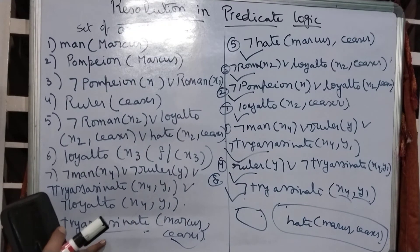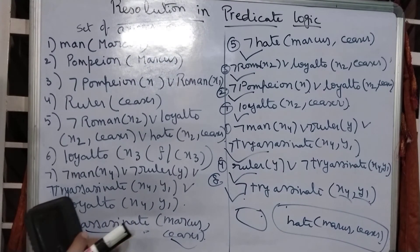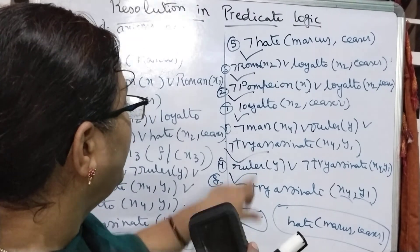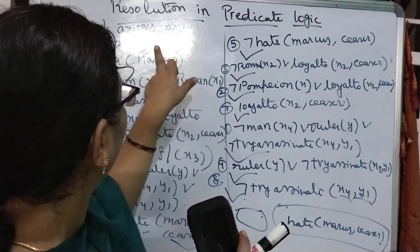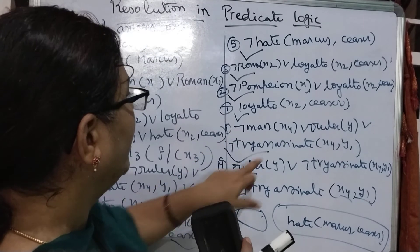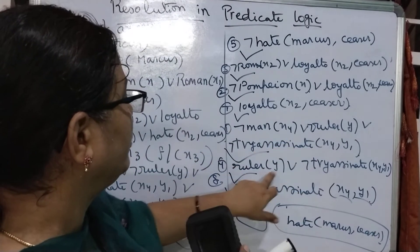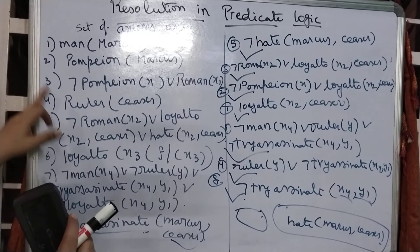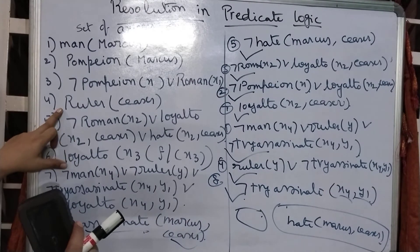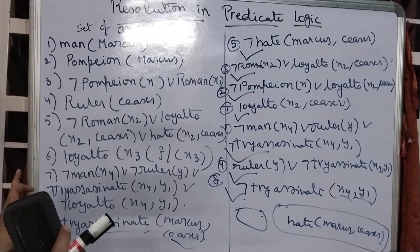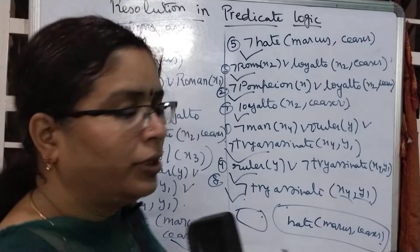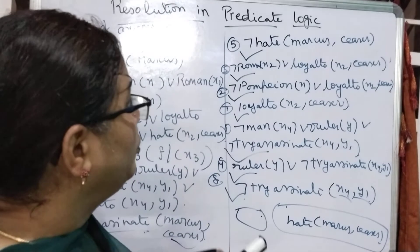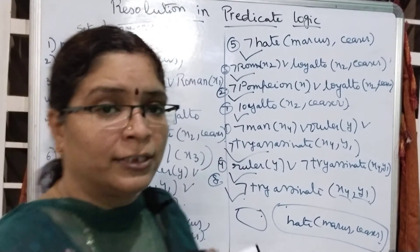How can try_assassinate get cancelled? By using axiom 8. Try_assassinate and try_assassinate(x4, y1) — and negation man(x4) gets cancelled with axiom number 1. Ruler can get cancelled with axiom 4 and try_assassinate can get cancelled with axiom 8. Finally, 4 and 8 — we got the contradiction. Like this you can work with resolution in predicate logic.